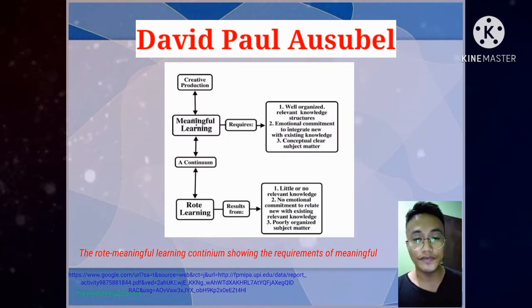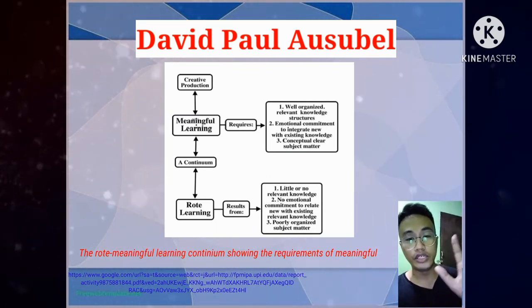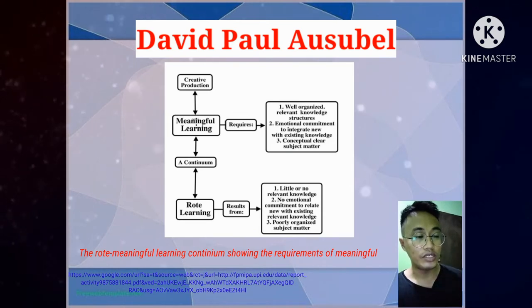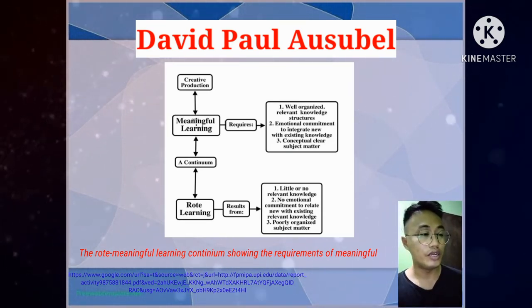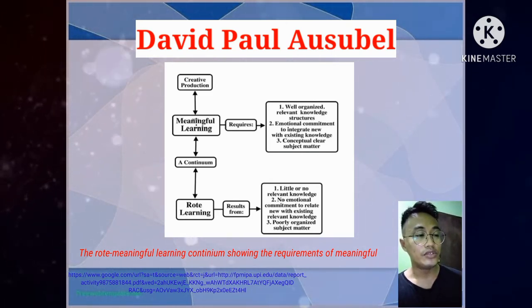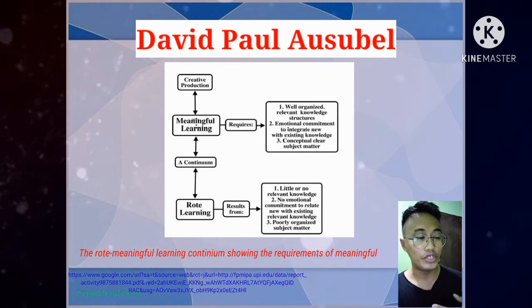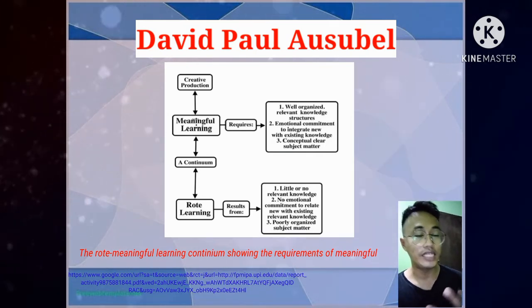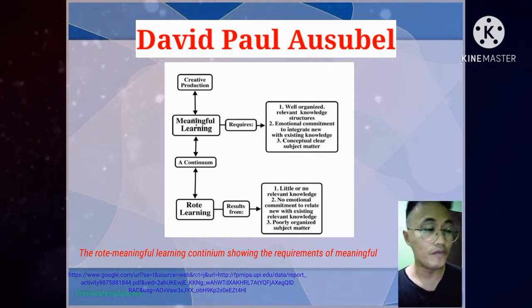In the graph, you can see there is a creative production. The learner creates a memory through creative production, and then after that, the learner has what is called meaningful learning — how the mind creates meaning. It transfers to how the learner finds meaning in that creative production, which is why it is called meaningful learning.